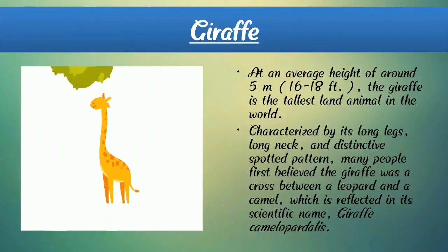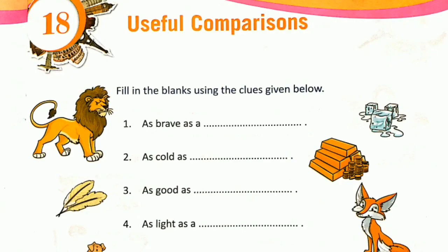Now we are going to learn the exercise for Unit 18: Useful Comparisons. Fill in the blanks using the clues given below. Number one: as brave as — lion is a brave animal, so as brave as a lion. Number two: as cold as — ice is very cold, so as cold as ice. Number three: as good as — gold is very good, so as good as gold.